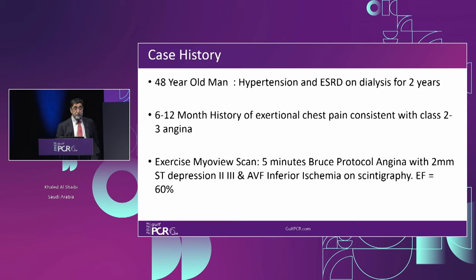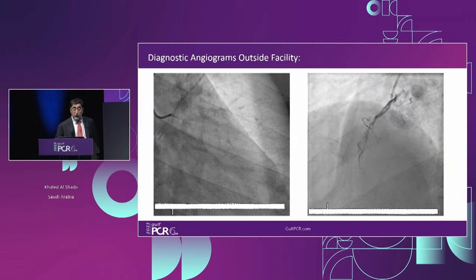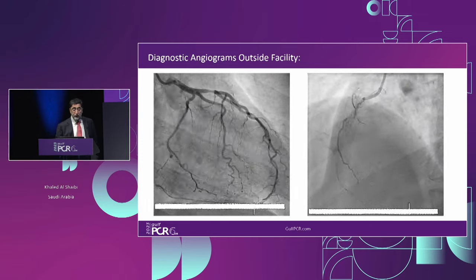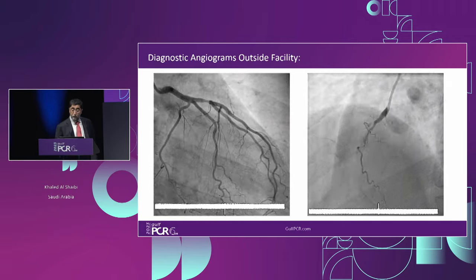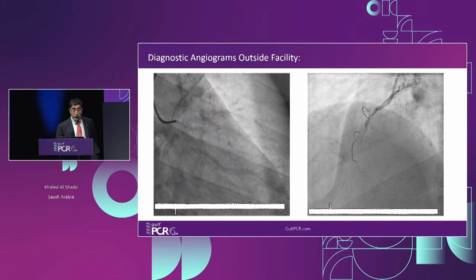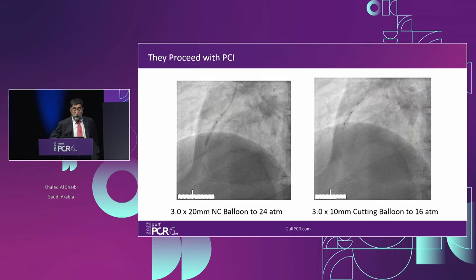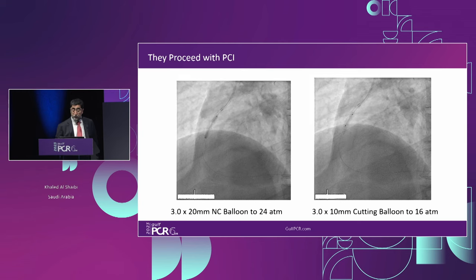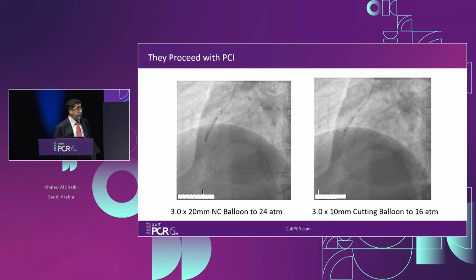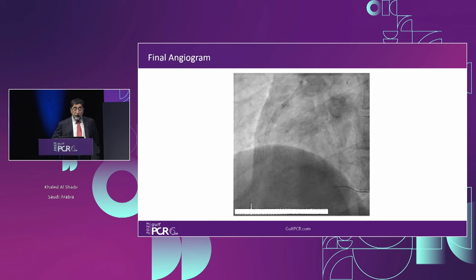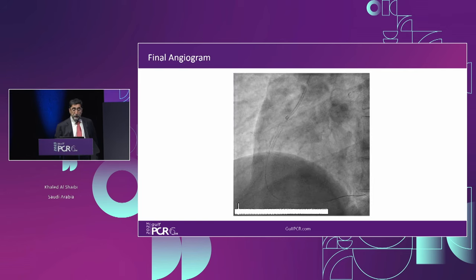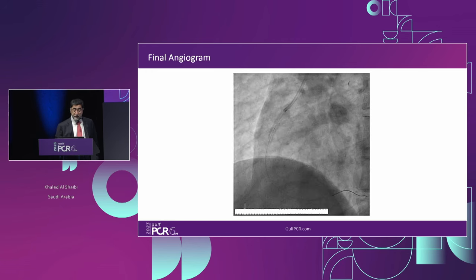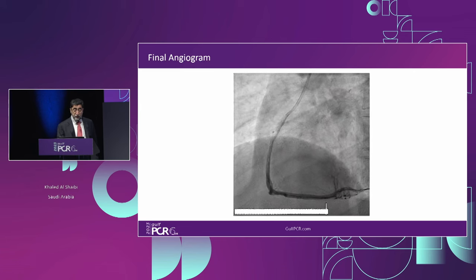A 48-year-old man with hypertension and end-stage renal disease on dialysis for two years, with about a year's history of exertional chest pains class two to three. A MyoView scan was strongly positive, indicative of inferior ischemia. He underwent a diagnostic angiogram at another hospital, which found an occluded, heavily calcified dominant right coronary artery. They proceeded with PCI using a 3.0 NC balloon at high atmospheres and a cutting balloon at higher atmospheres, but a persistent waist on the balloon indicated non-expansion. Rightly so, they stopped and referred the patient to us.